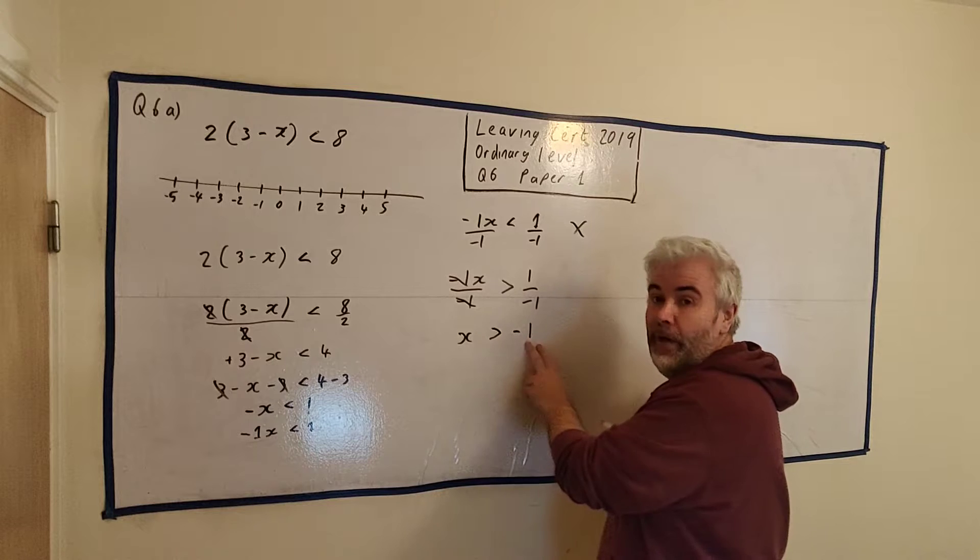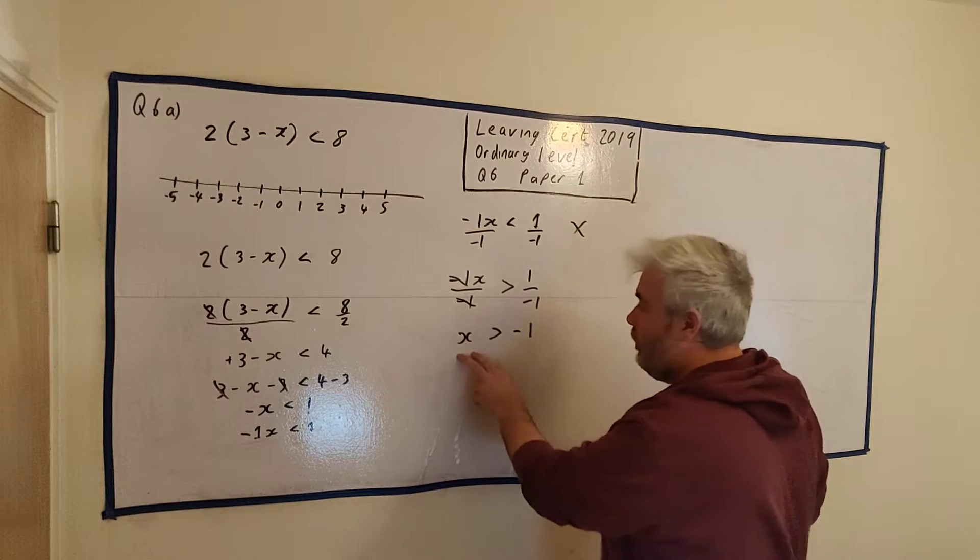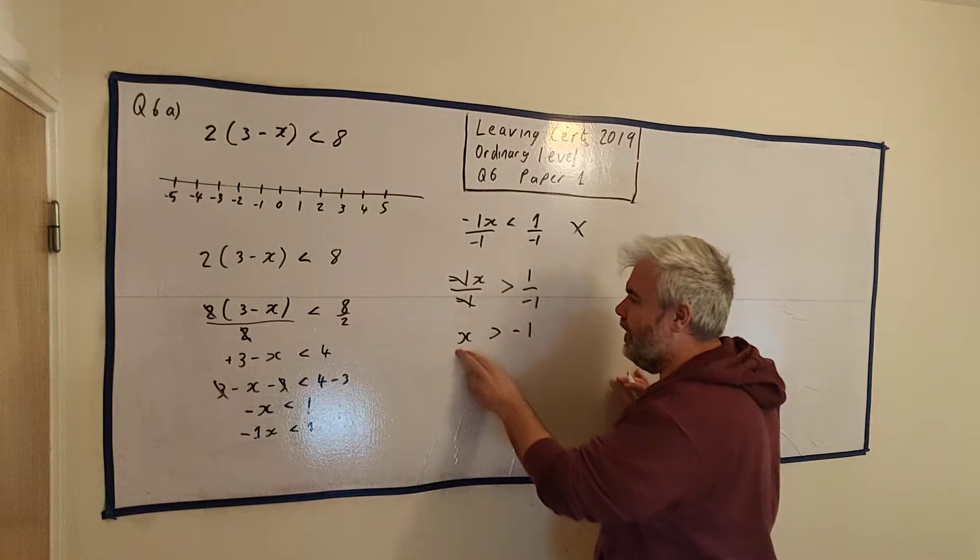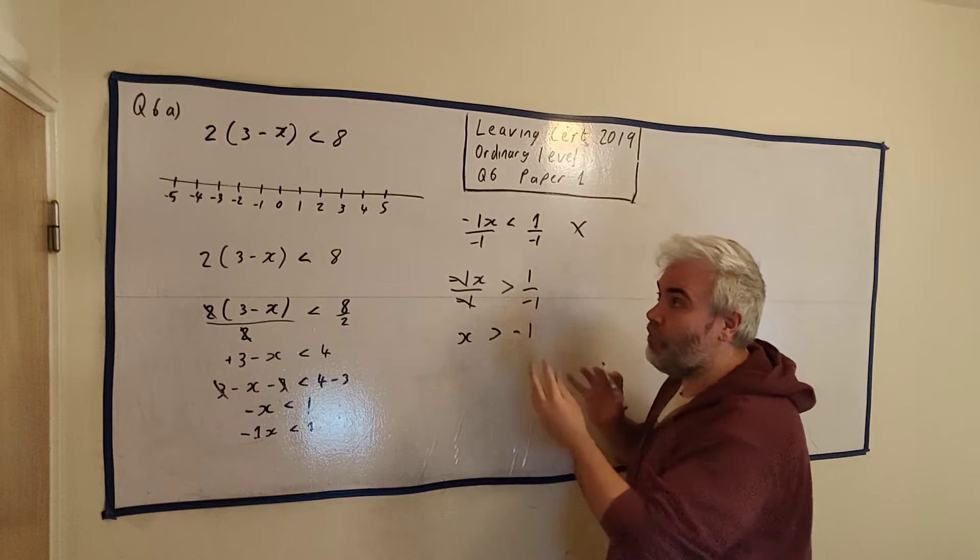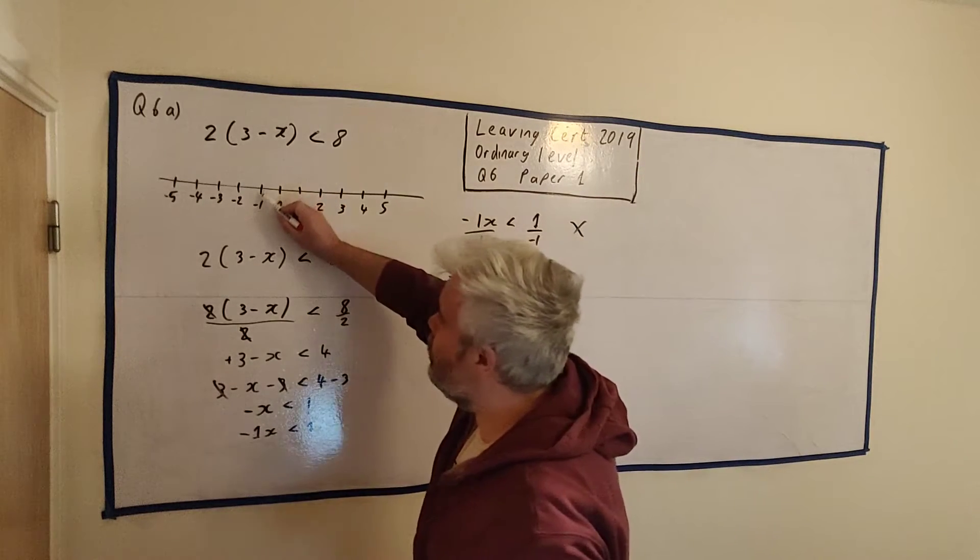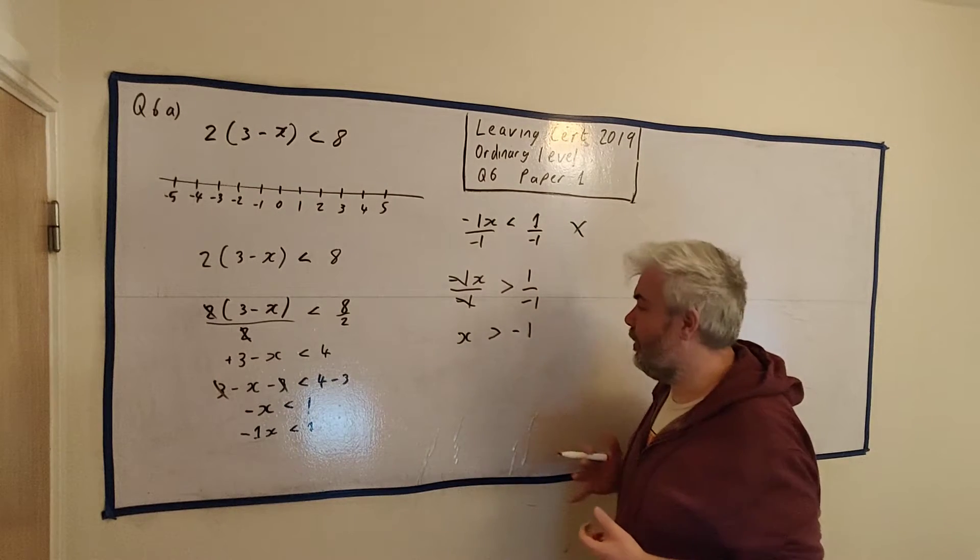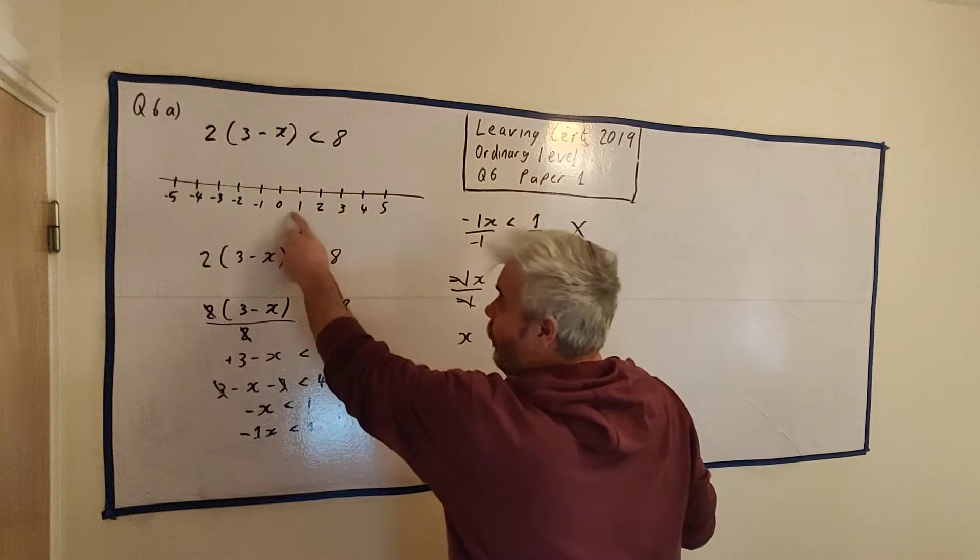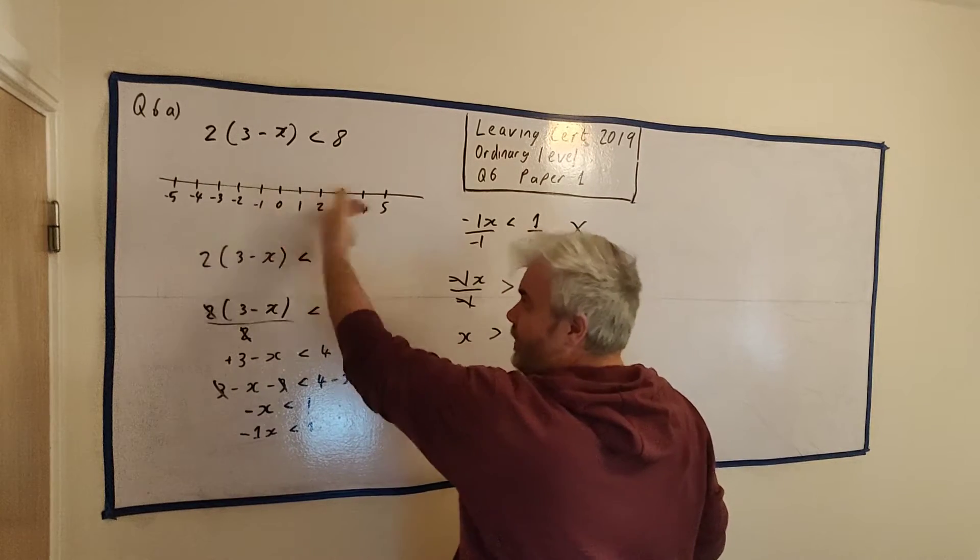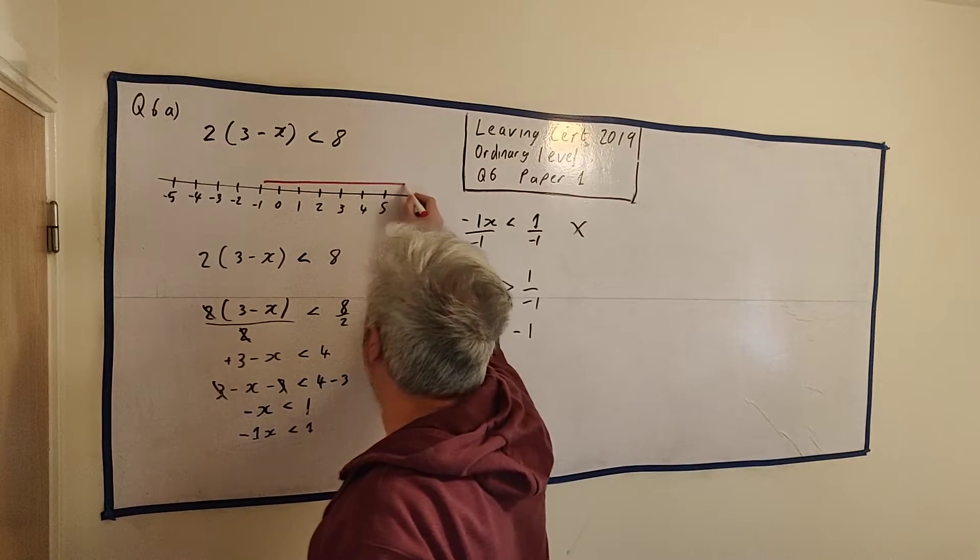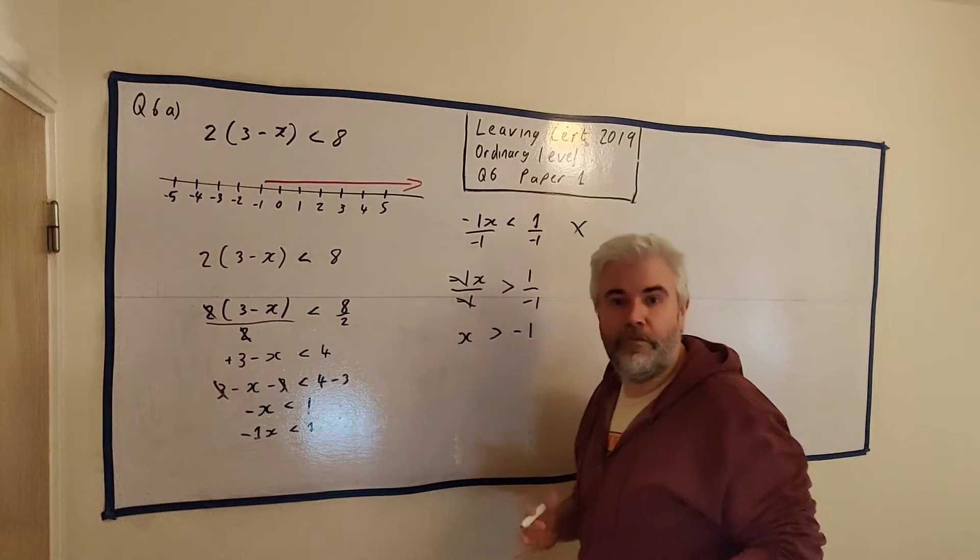So how do we draw this? X is bigger than -1. Think of it like equals again. X is equal to -1. -1 is the important part. -1 is going to be important here. But x is bigger than that. What numbers are bigger than -1? 0, 1, 2, 3, 4. Everything this way. So this is why we draw our line going like this, everything above the -1.